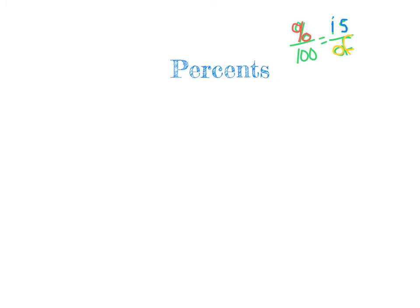Here's why the proportion method is helpful: sometimes we're not looking for the percent — sometimes we're looking for the 'is' or the 'of.' The great thing about this formula is we can use it no matter which part of the proportion we're looking for. Just like with proportions — as long as you know where x is, you know to multiply the other side and then divide by the last number.